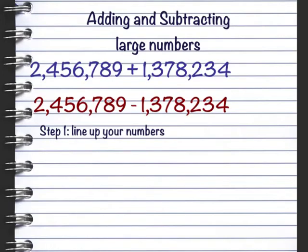Most of you have learned last year how to add and subtract numbers. So we're just going to go a step farther and make the numbers larger. So first off, you have two different numbers. I'm going to read them to you. You have 2,456,789 plus 1,378,234. You also have 2,456,789 take away 1,378,234.